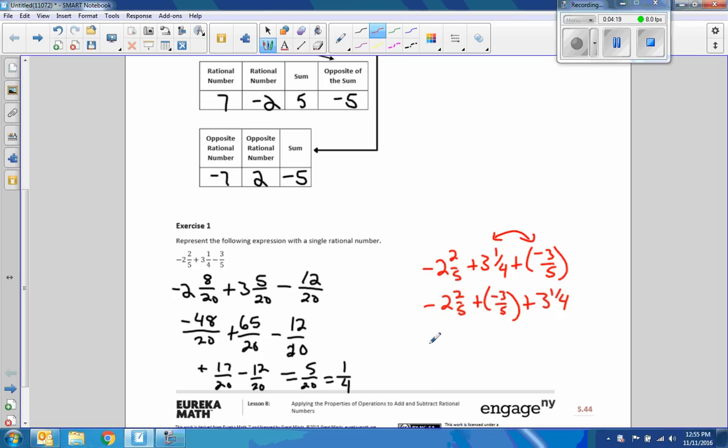That's going to give us negative 2 and 2 fifths plus negative 3 fifths is negative 2 and 5 fifths plus 3 and a quarter. Negative 2 and 5 fifths, well that's a 1, so that's negative 3 plus 3 and a quarter, and we get one fourth.